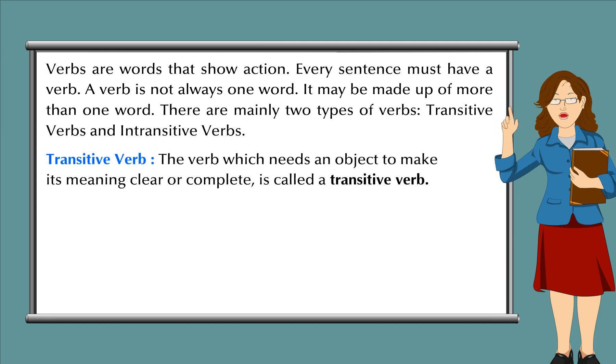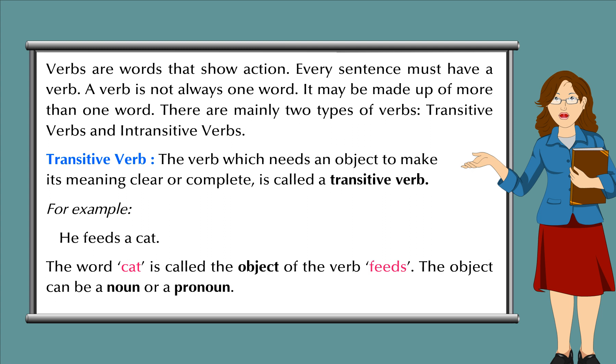Transitive verb: The verb which needs an object to make its meaning clear or complete is called a transitive verb. For example, he feeds a cat. The word cat is called the object of the verb feeds. The object can be a noun or a pronoun.